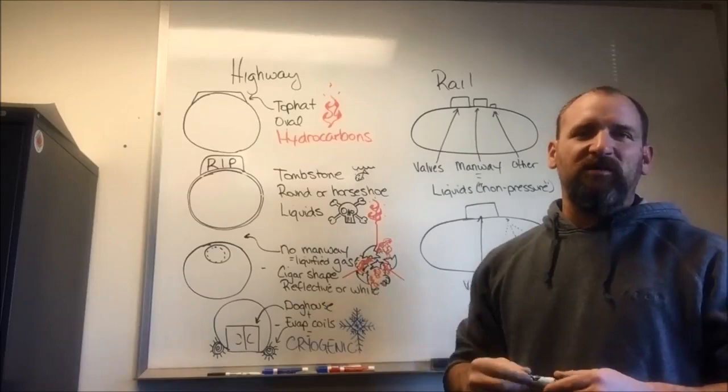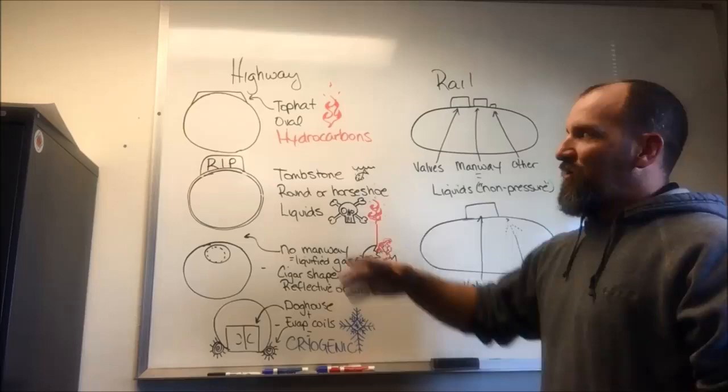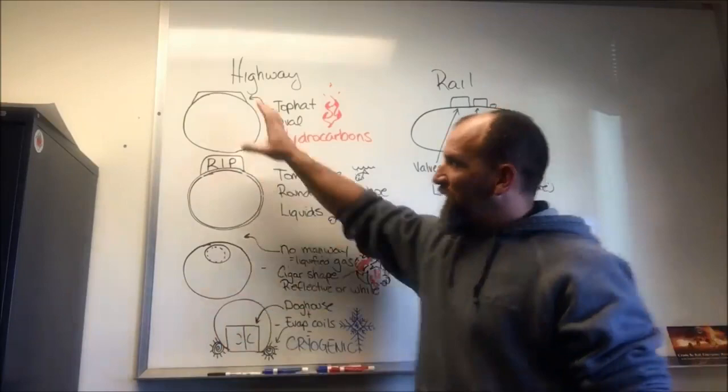So here's step one that we were talking about in our four-step process for hazmat containers. I've got highway and rail containers drawn up here, just a real quick profile view so that you can quickly roll up on scene and look for these profiles to figure out what type of PPE you need to wear. Highway side is pretty easy, we're doing all these from the ends.